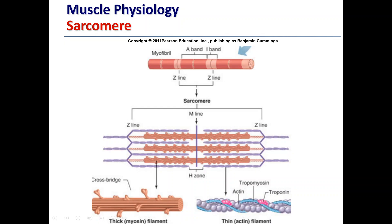Zooming in on the sarcomere from Z-line to Z-line, we can see more detail in the structure. We have an arrangement of thick and thin filaments. The thick filaments are known as myosin — a very thick filament with a number of myosin heads on it. In purple we have the thin filaments, which are predominantly made up of actin, tropomyosin, and troponin. The orientation of these thick and thin filaments explains why skeletal muscle appears striated, with different areas, zones, and bands within each sarcomere.